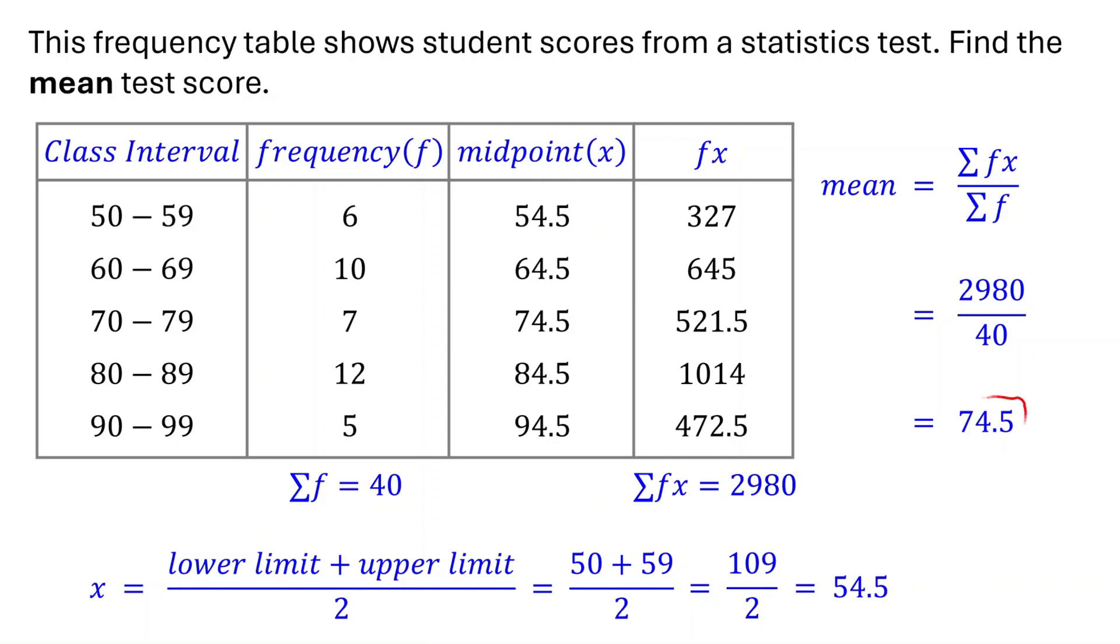Keep in mind that the mean here is an estimate. This is because we don't know each student's exact score. We only know the score ranges and how many students fall into each range. So we use the midpoint of each range to represent the scores and calculate the mean based on that. That means it is not an exact average, but an estimated one.